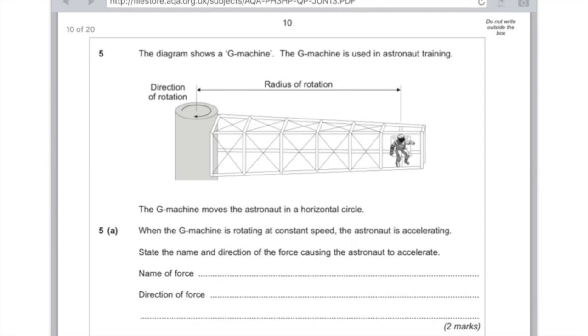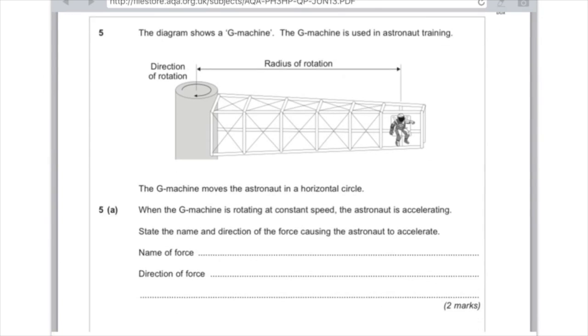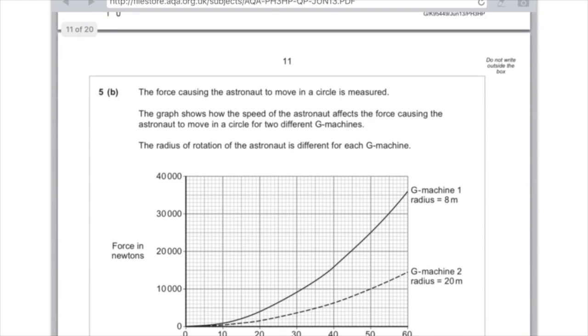And the direction of the force, it doesn't matter what it is that's turning in a circle. It always, the force always acts towards the centre of that circle. So that's what you need to write there. It doesn't matter if it's an astronaut or a car, or what was the last example? I literally can't remember.